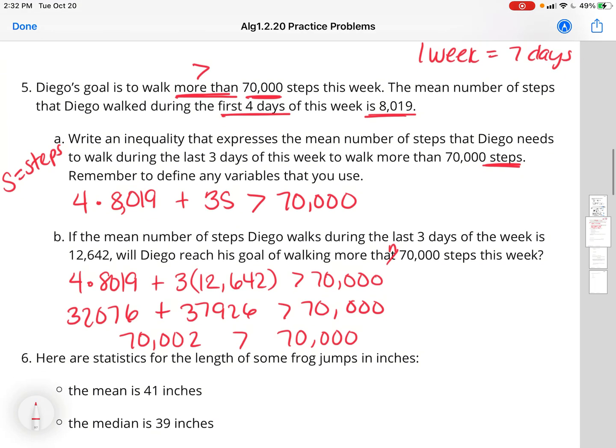Letter B is saying if he walks 12,642 steps each day over the next 3 days, will that be more than 70,000? So all I did was plug in 12,642 for the steps. So over the first 4 days, he walked about 32,076. If he does 12,642 each day for the next 3 days, that'll be 37,926.